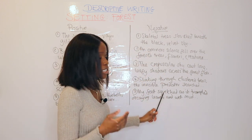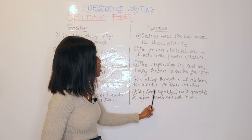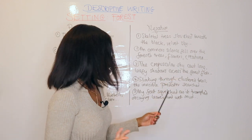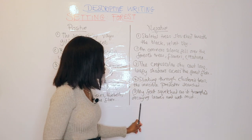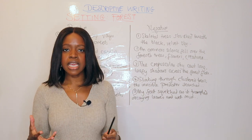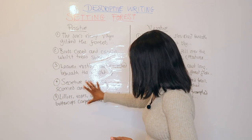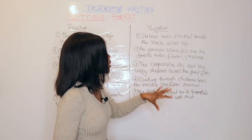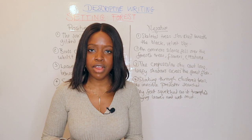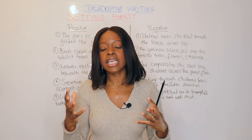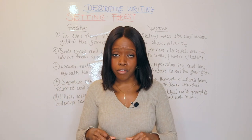The fourth negative phrase: 'Slinking' — walking in a sneaky, suspicious way — 'Slinking through the clustered trees, the invisible predator searched...' The fifth and final phrase: 'My feet squelched as I trampled decaying leaves and wet mud.' This gives a really dark, negative framework for the forest, as opposed to the beautiful positive imagery. Commit these to memory if you're describing the forest from a scary perspective — these are powerful phrases to start your descriptive writing with a forest setting.